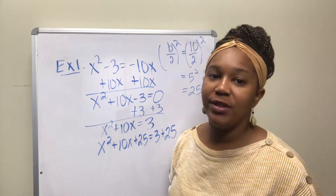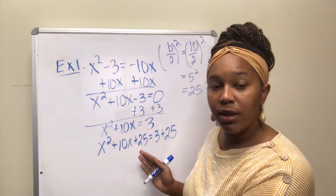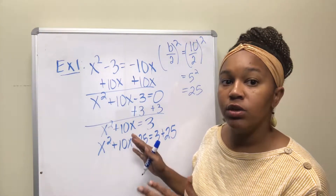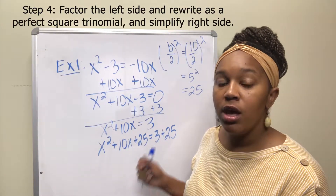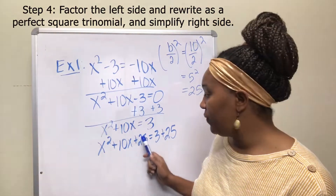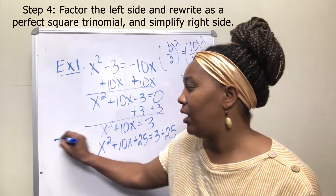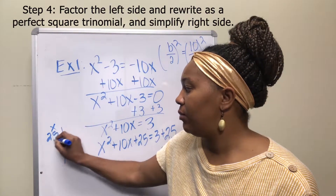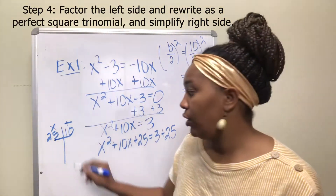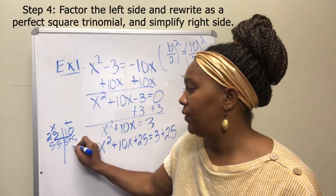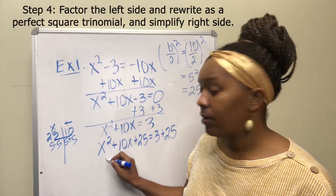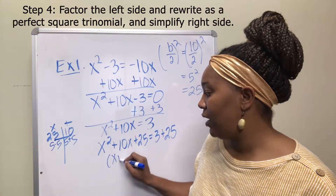What we just did was create a perfect square trinomial on the left side by adding that value. Now we factor the left side and write it as a perfect square trinomial, and simplify the right side. We're finding factors of 25 that add to 10 — two numbers that multiply to give 25 but add to give 10. That's 5 and 5. So this factors into x plus 5 times x plus 5, which is x plus 5 squared.